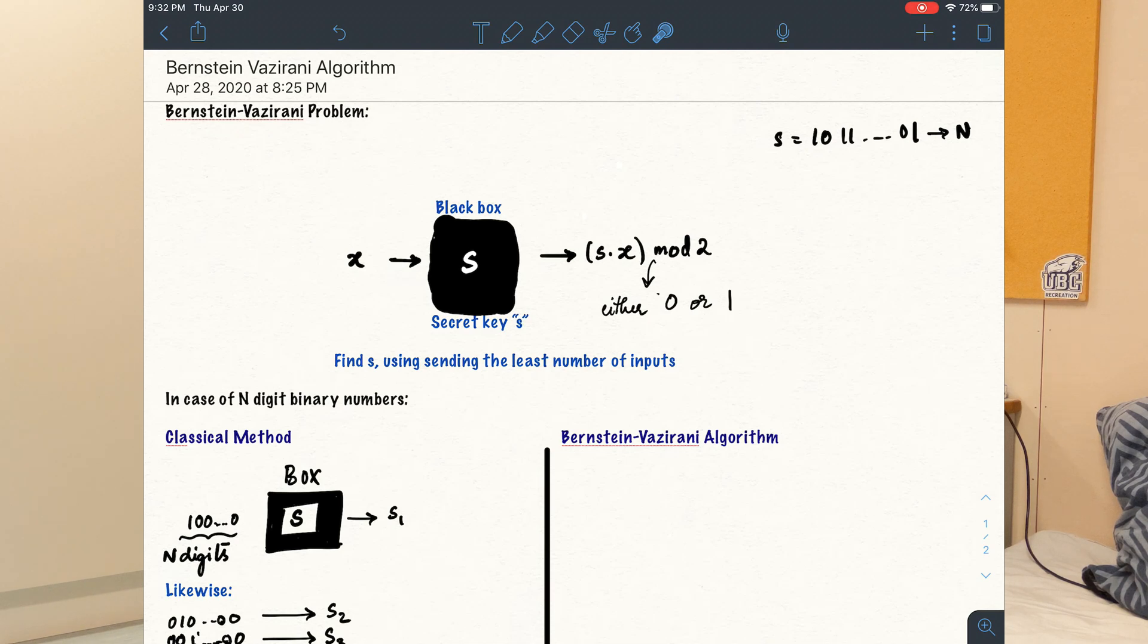The Bernstein-Vazirani problem is quite similar to this. We're given a black box and we're supposed to find out the secret key S, which is a string of n number of binary digits.